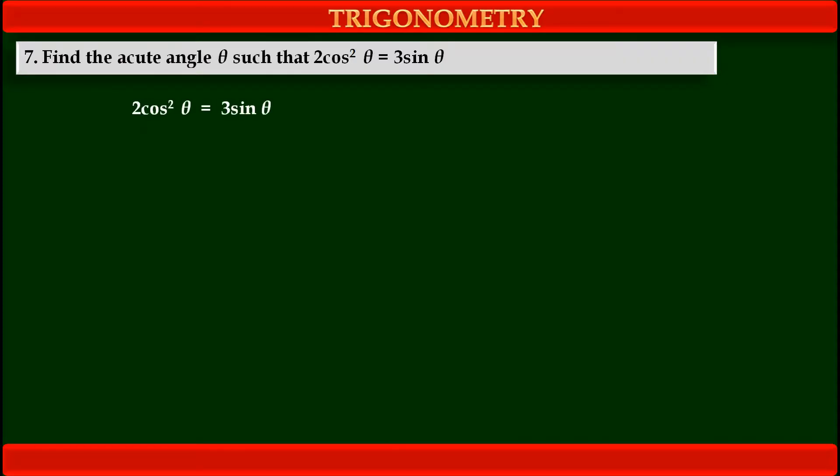Now see here what is given. The condition is 2cos²θ = 3sinθ. This equation is given as condition. Now, to solve this equation by using quadratic equation method, we want only one variable. But here, 2 variables are given. One is cosθ, other is sinθ.